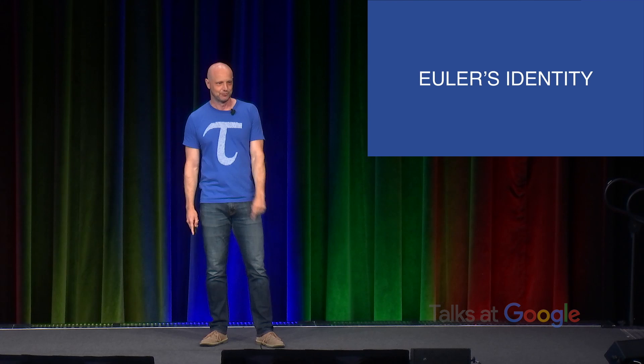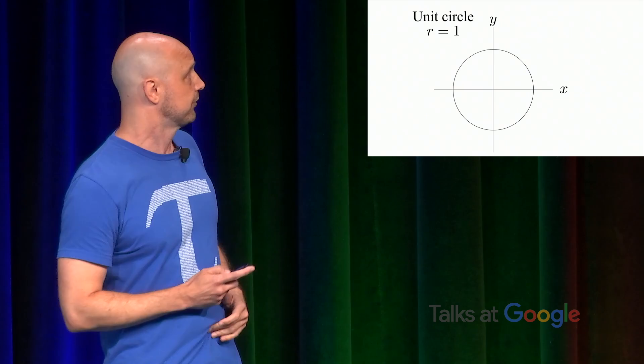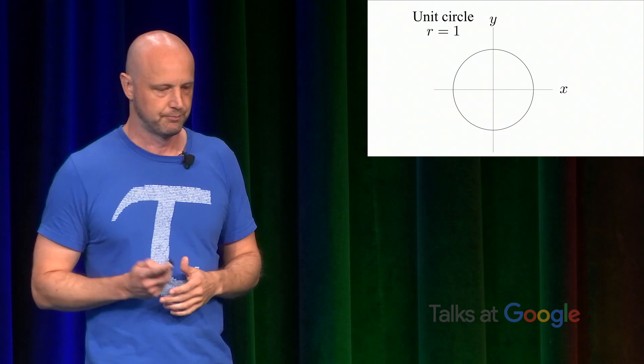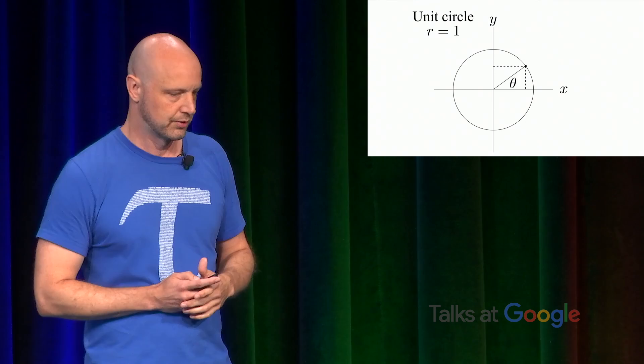So to talk about Euler's identity, I want to discuss first the circle functions. So let's look at what's called a unit circle. So it's radius equals one. And there's a point here on the circle with an angle theta from the horizontal. And there's an x-coordinate and a y-coordinate. And in terms of what they call the circle functions, this is cosine and sine. I'm sure many of you are familiar with this. So that point, it has x-coordinate cosine theta and y-coordinate sine theta.